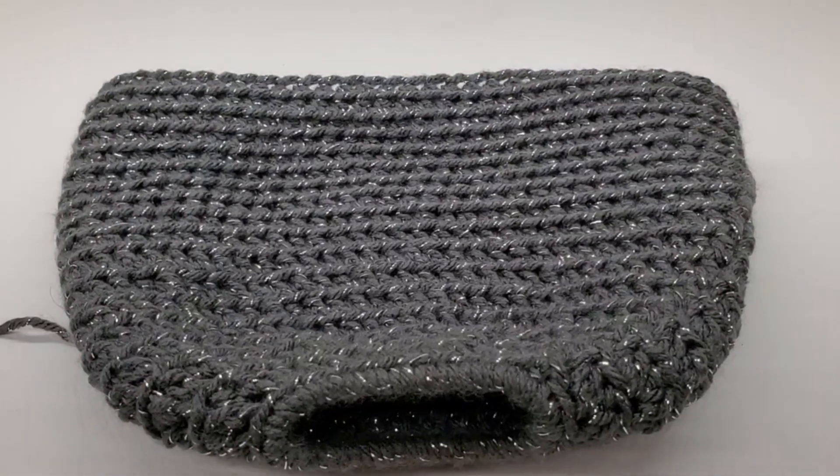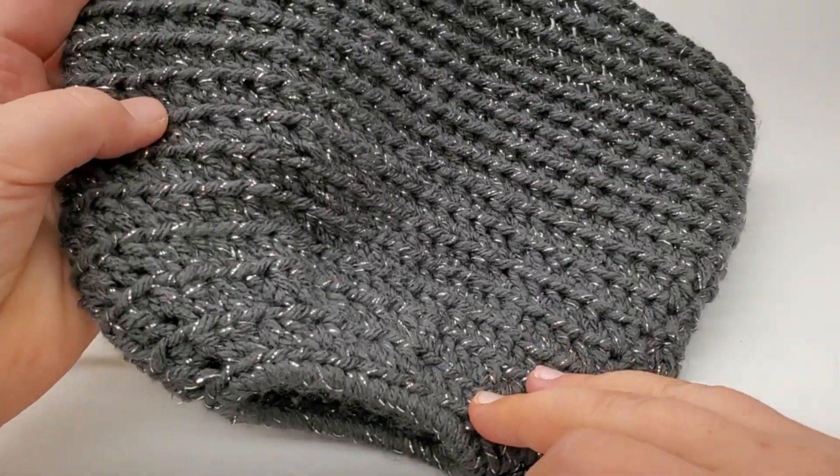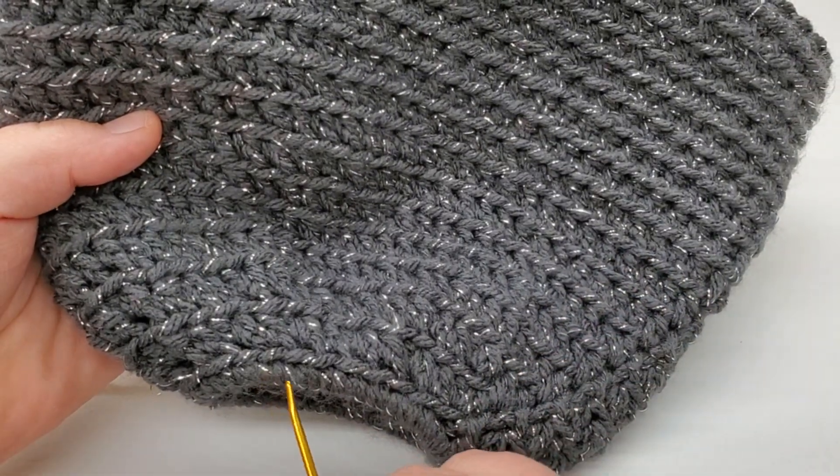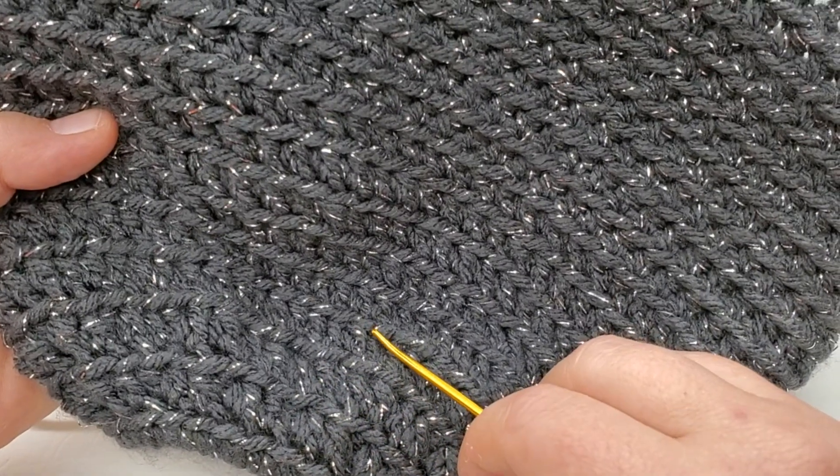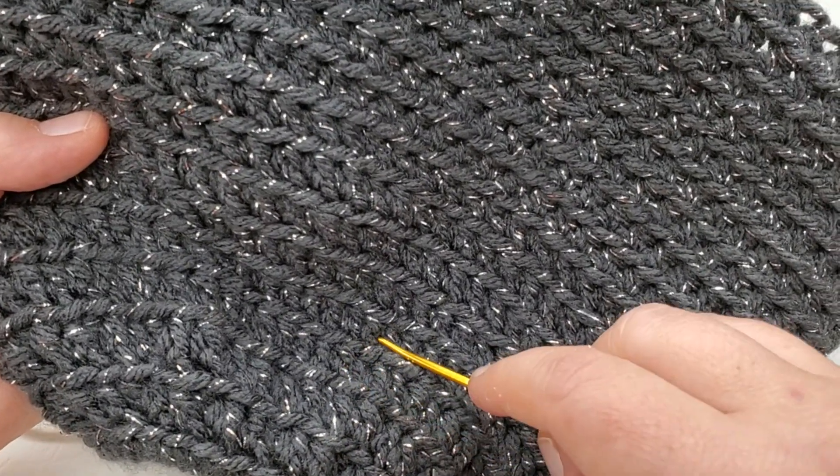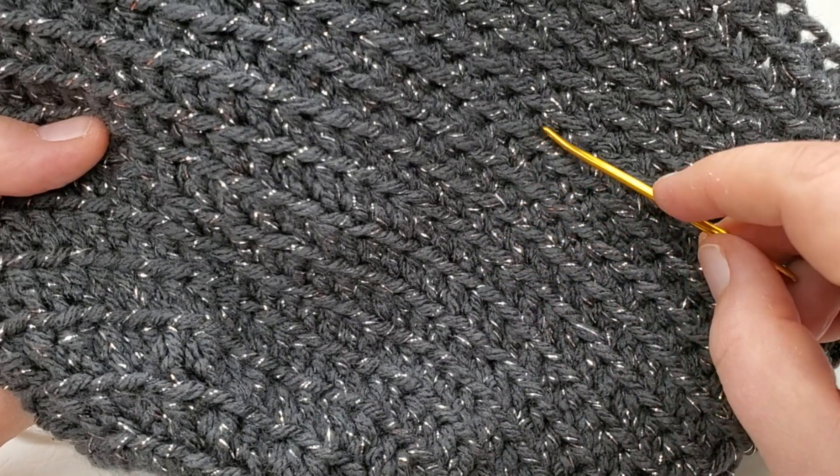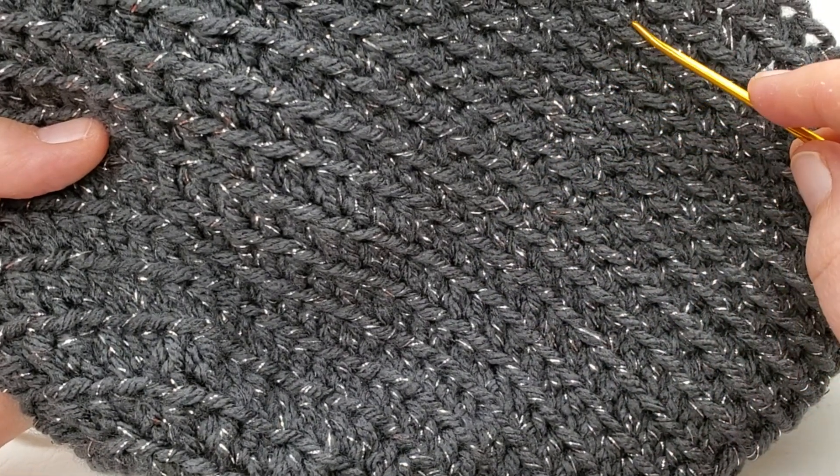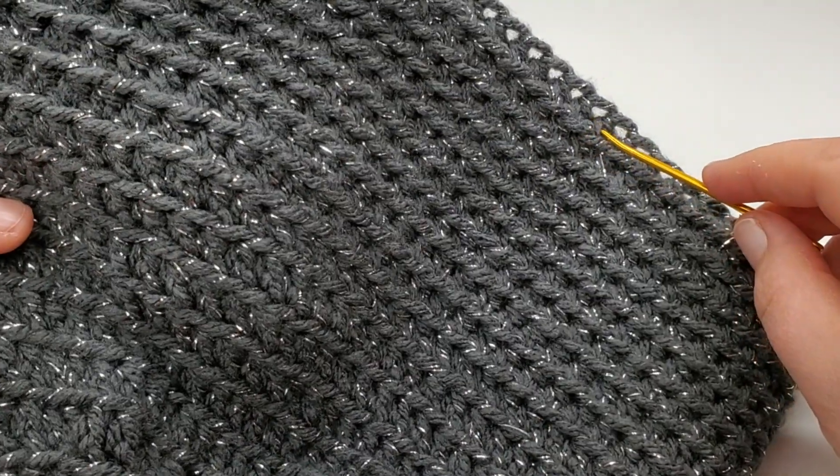Alright guys, I'm back. I worked my 14 rounds. So I have a total of 18 rounds. So I have one around the hair tie. That's one, two, three, four, five, six, seven, eight, nine, 10, 11, 12, 13, 14, 15, 16, 17, 18.